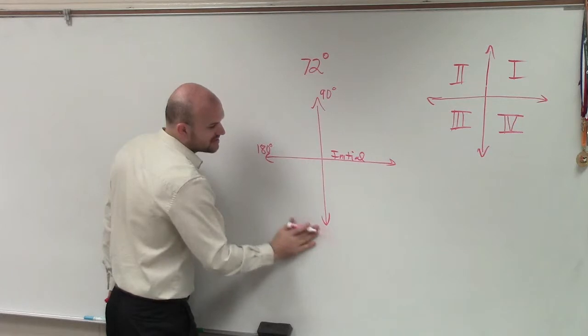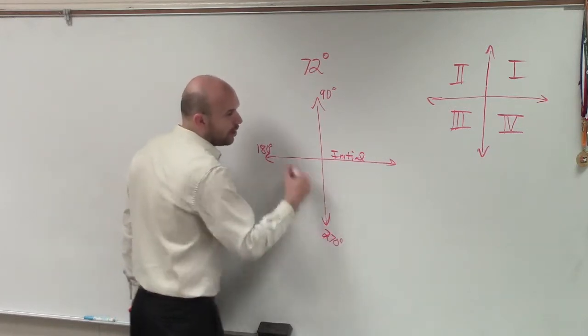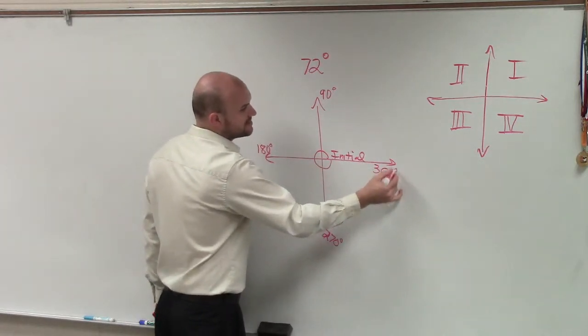Three quarters of a circle would be 270. And then all the way around, if I wrapped an angle all the way around, that would be 360 degrees.